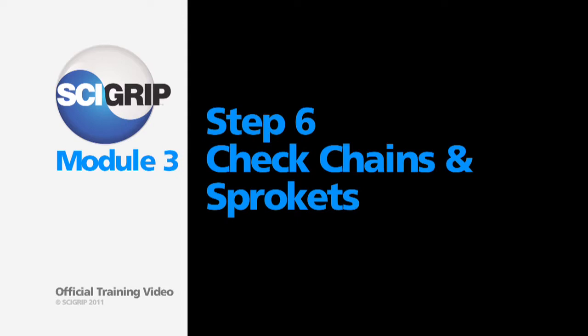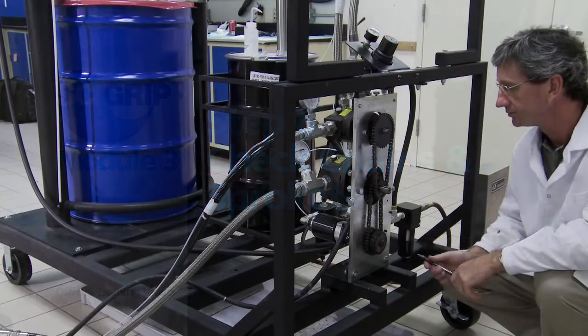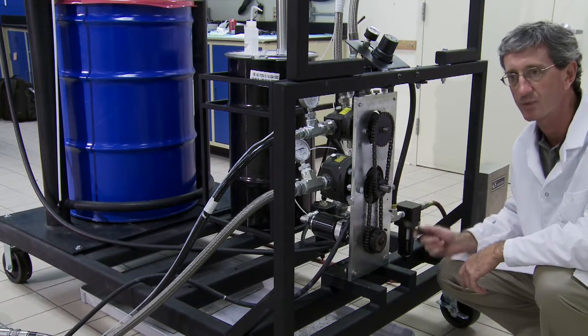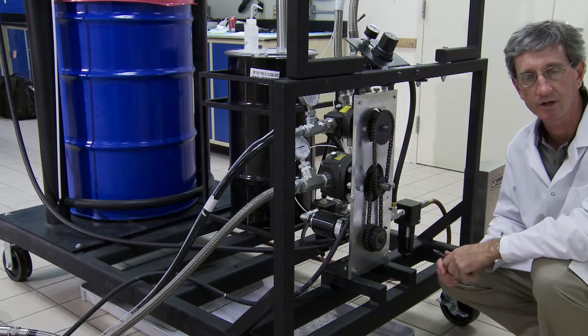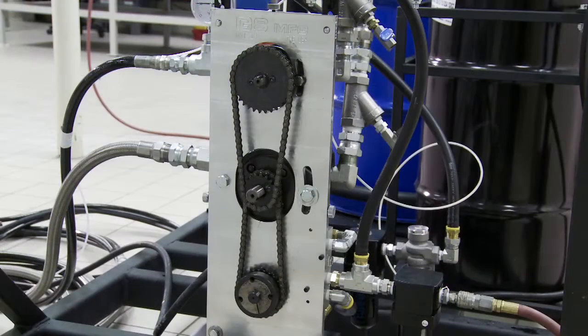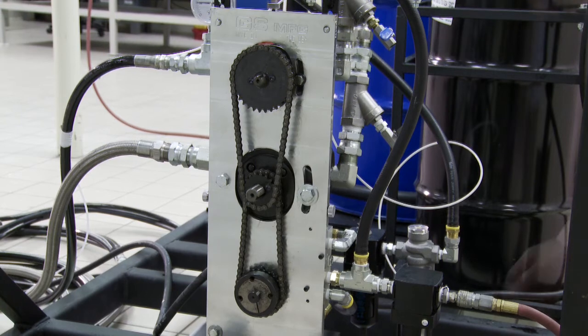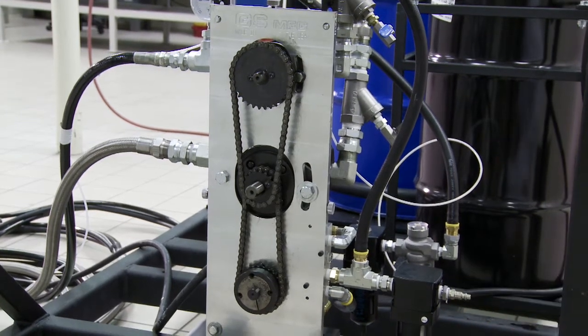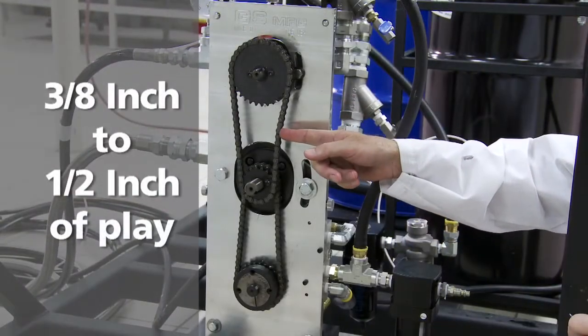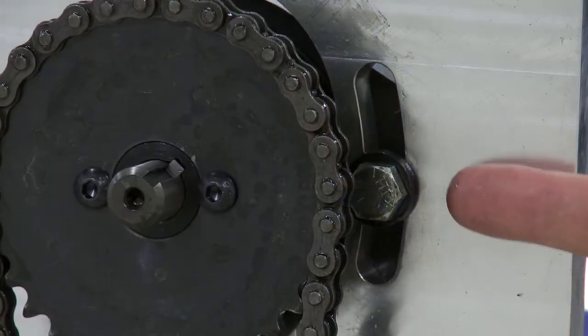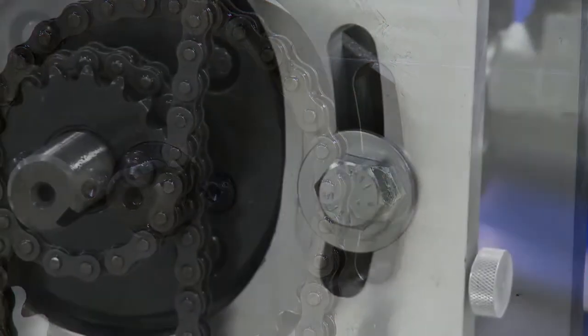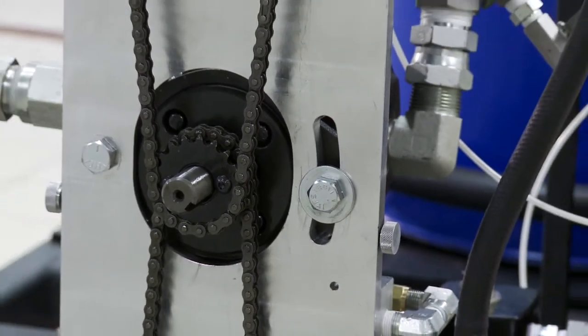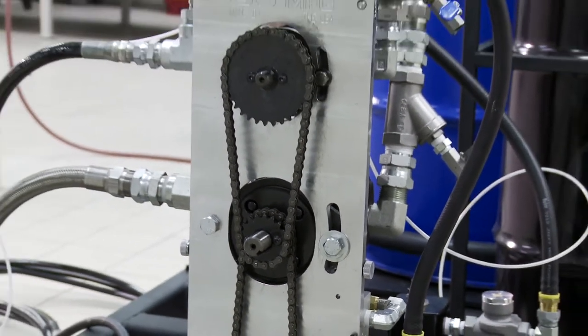Step six, inspect chains and sprockets. Visually inspect both chains and all four sprockets looking for any obvious wear. Operate the pump and listen for any clicking and popping which might indicate a misalignment or wear problem. With the chain, you should see at least three-eighths to half inch of play. If the chain tension needs adjustment, loosen the adjustment bolts on either the activator or the adhesive metering pump and turn the pumps until the proper chain tension is achieved.